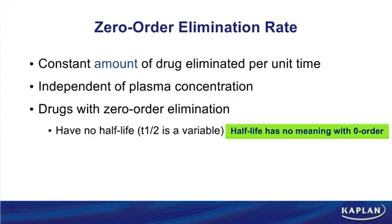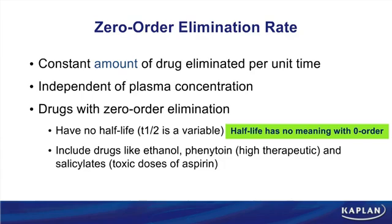When you think about zero order, think about these three drugs listed at the bottom of the slide: ethanol, phenytoin, and salicylates — with aspirin as the primary drug. The phrase to remember those three: take the first letter of Phenytoin, Ethanol, and Aspirin, and you get the phrase 'Zero PEA's for me.' Zero stands for zero-order kinetics; P is phenytoin, E is ethanol, A is aspirin.